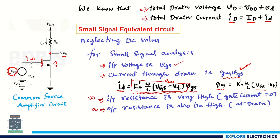The device operates in the saturation region. In saturation, the drain current I_D is independent of the drain voltage. Since we measure output resistance at the drain terminal, and current is independent of drain voltage, we can say output resistance is infinite.